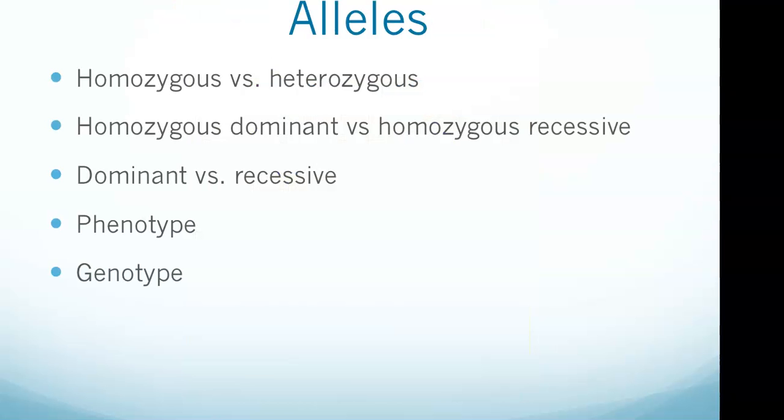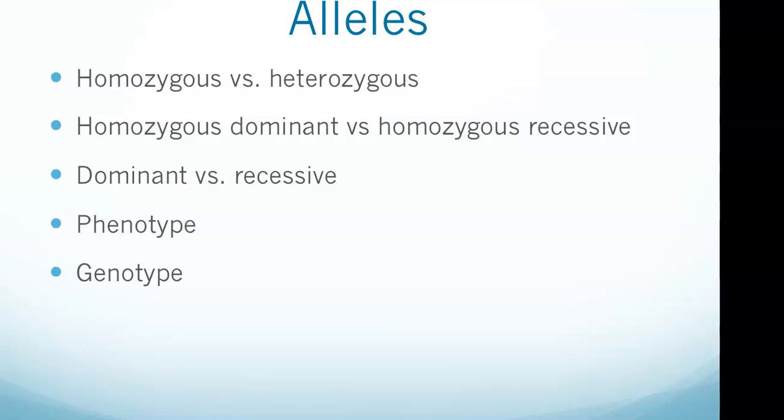As we jump into alleles, alleles are different forms of a gene linked to specific characteristics. When two different alleles are inherited for a trait but only one allele is expressed, that allele is called the dominant allele. The allele that is not expressed is recessive. If the alleles are alike, that person is homozygous for that particular gene. If the alleles are different, that person is heterozygous for that particular gene. And that should be pretty easy to remember, right? Homo meaning same, hetero meaning different.